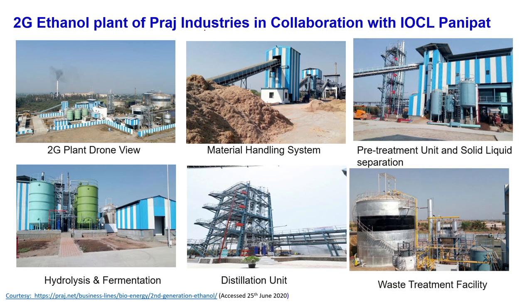This is actually the 2G ethanol plant of Praj Industries in collaboration with IOCL — the IOCL Panipat plant has already started. Looking at the entire plant setup: the biomass comes already ground, is sent by conveyor belts — this is the material handling system. Then there is the pretreatment unit with solid-liquid separation. Pretreatment comes before the hydrolysis and fermentation step. Then the distillation setup separates ethanol and water, and finally waste treatment. The cake is burnt with supplementary fuel to get steam.